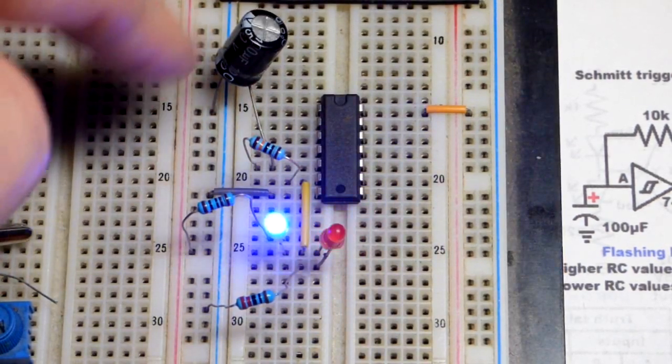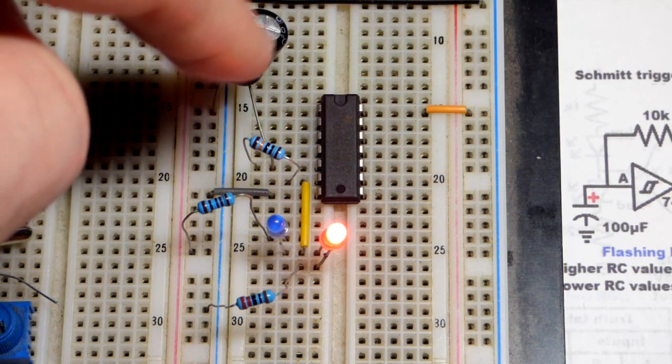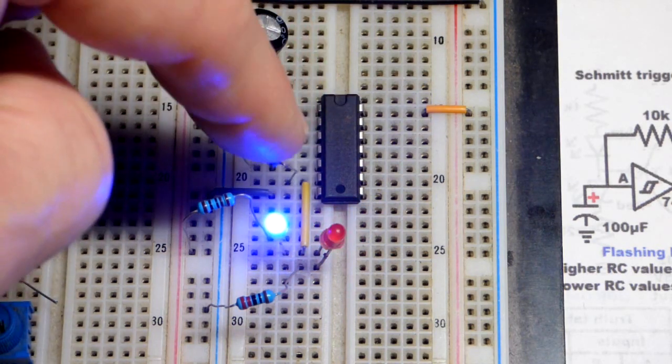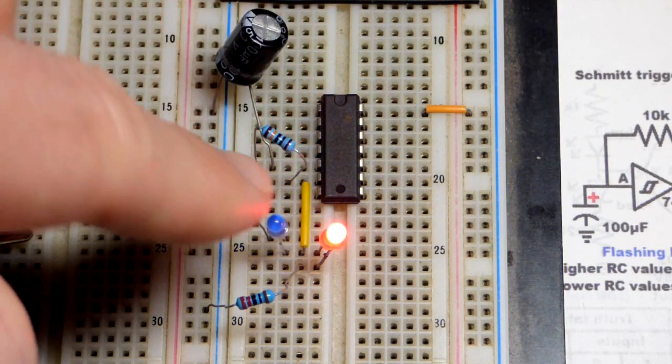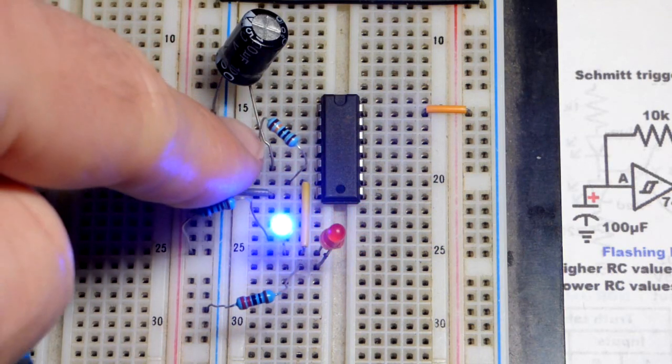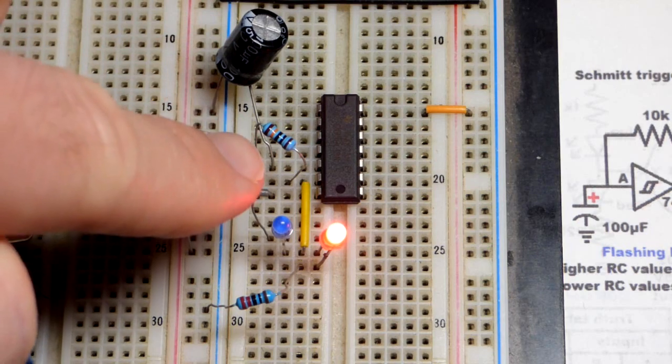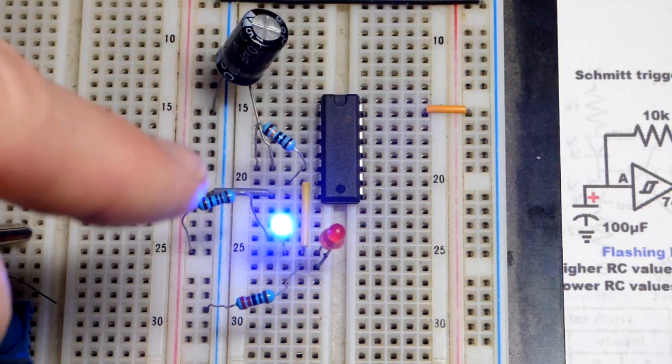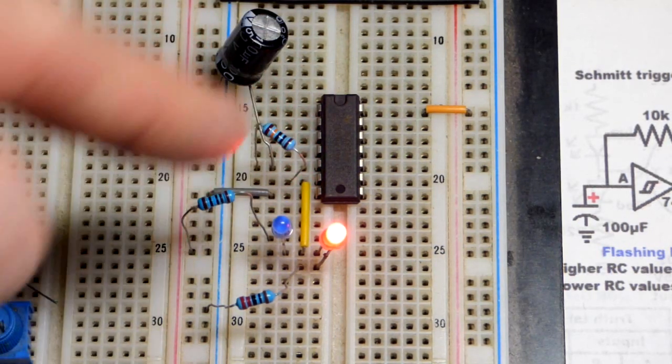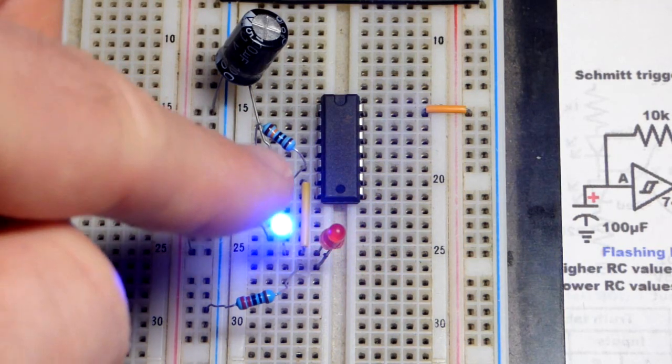We discharged it, so we started off with the capacitor at zero volts at the input. So the output was high. That was charging the capacitor through that 100,000 ohm resistor. Once I got a high enough voltage, the output went low because it's an inverter.